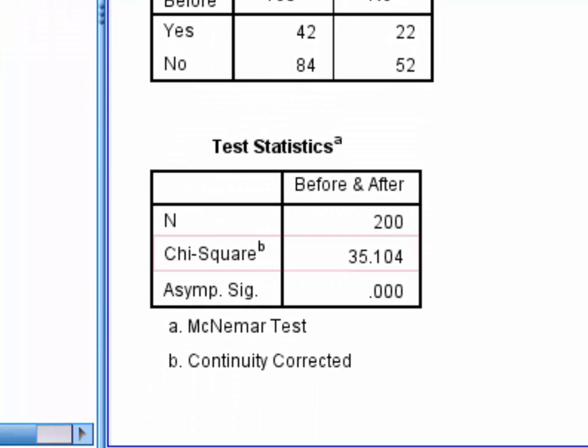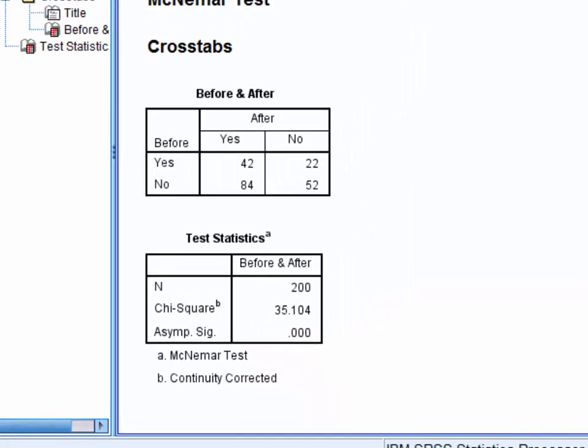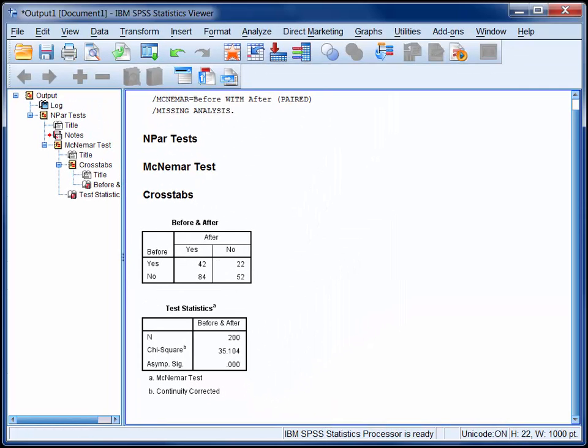In the second table we have a chi-square statistic and associated significance level. As this significance level is less than 0.05, and referring back to the numbers in the first table, we can conclude that significantly more participants altered their attitudes in favor of stem cell research than against stem cell research.